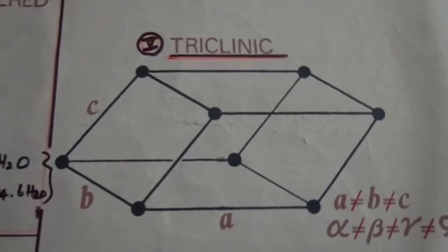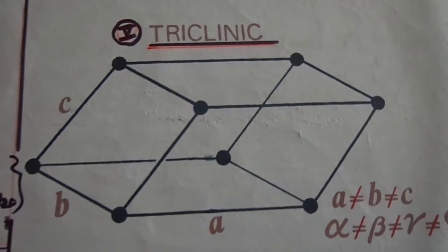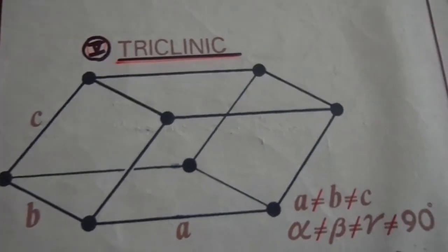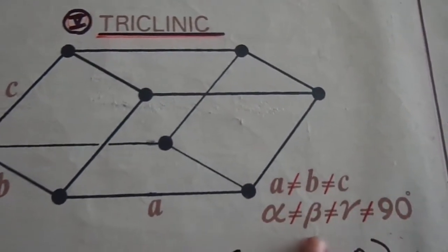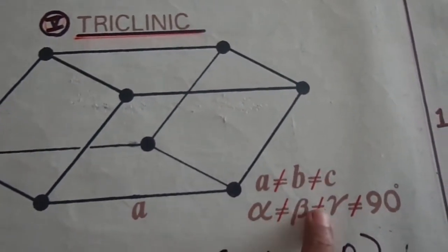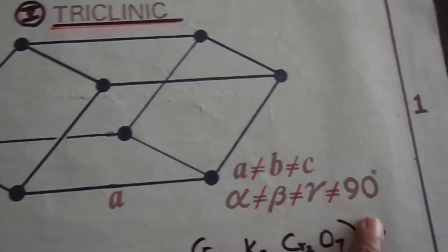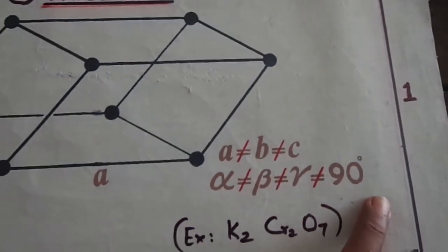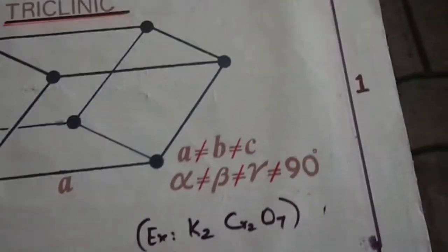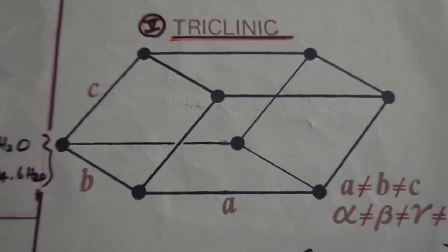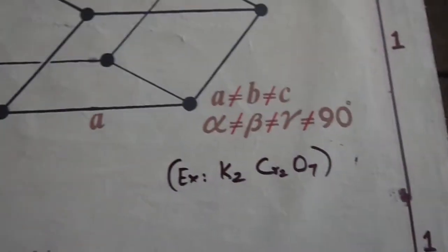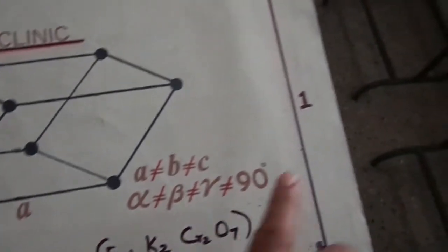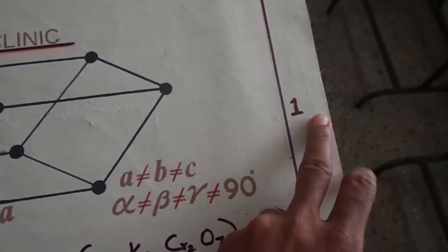Then for the fifth type: triclinic. A is not equal to B which is not equal to C, and alpha, beta, gamma are all not equal to 90 degrees. The triclinic structure and its example are shown, and this is one type.